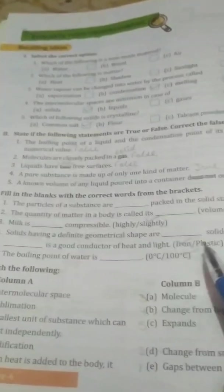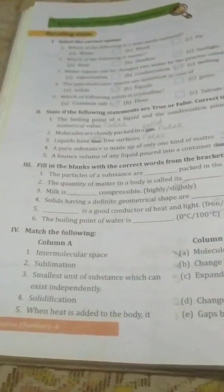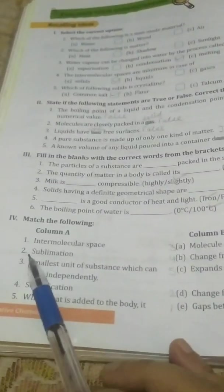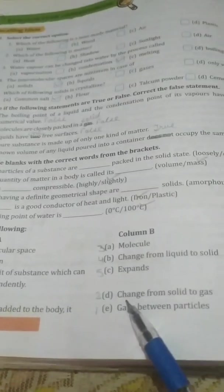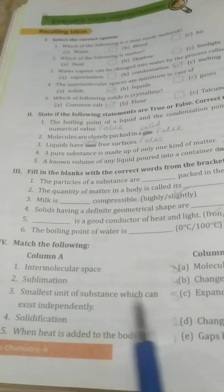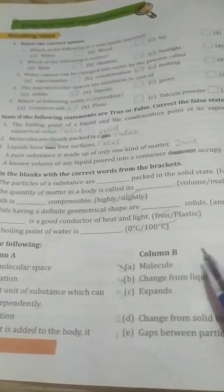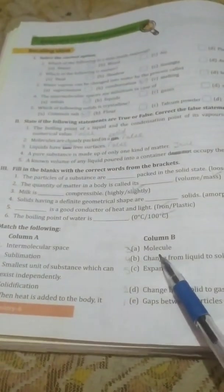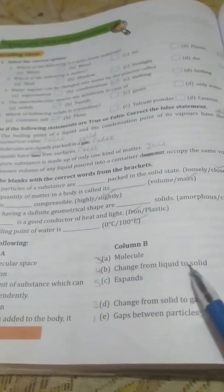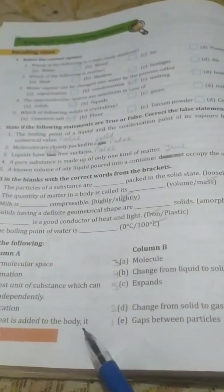For this sixth part you have to write 100 degrees Celsius. Fourth part is match the following. First one is intermolecular space, so intermolecular space is gaps between the particles. Second, sublimation means change from solid to gas without changing into liquid, directly changes from solid to the gaseous state. Third, smallest unit of substance which can exist independently, so answer is third, that is molecule. Then fourth is solidification, means changing from liquid to solid. And fifth, when heat is added to the body it expands.